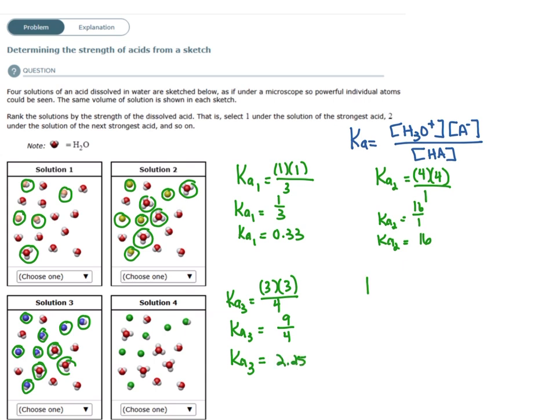And the same for my fourth solution. H3O pluses, I see one, two, three, four. And for my A minus, I see one, two, three, four. And HA, I see one, two, three.